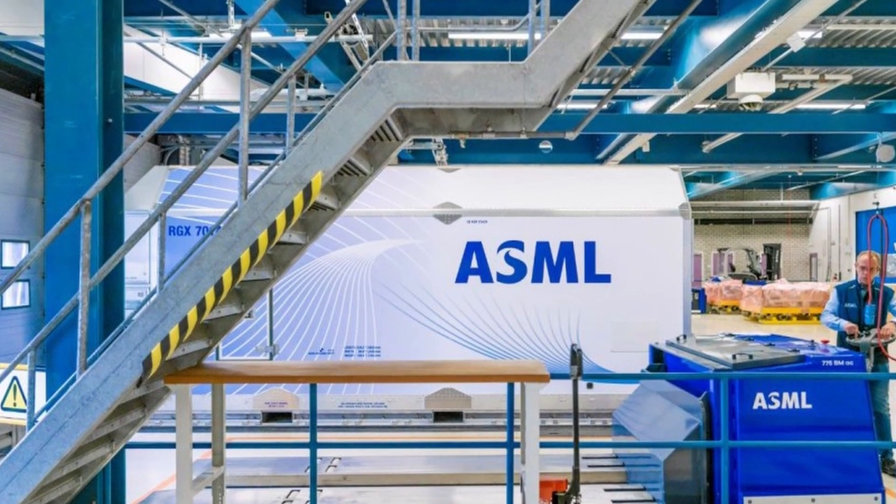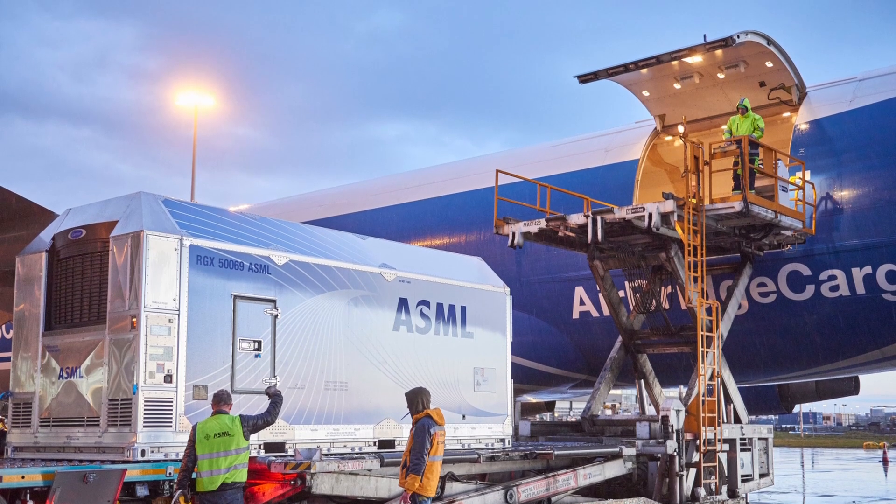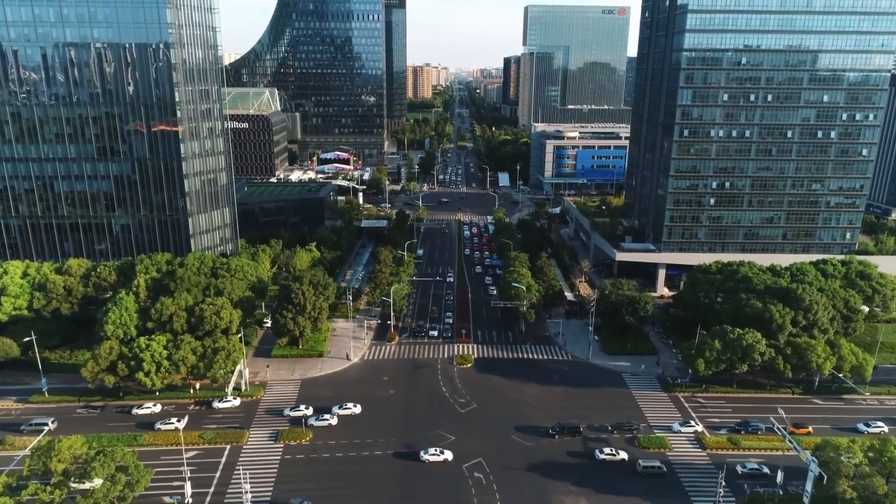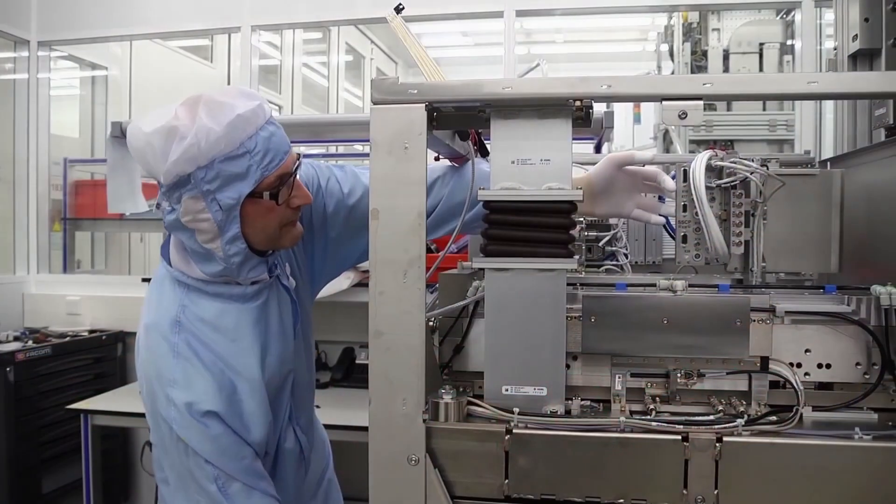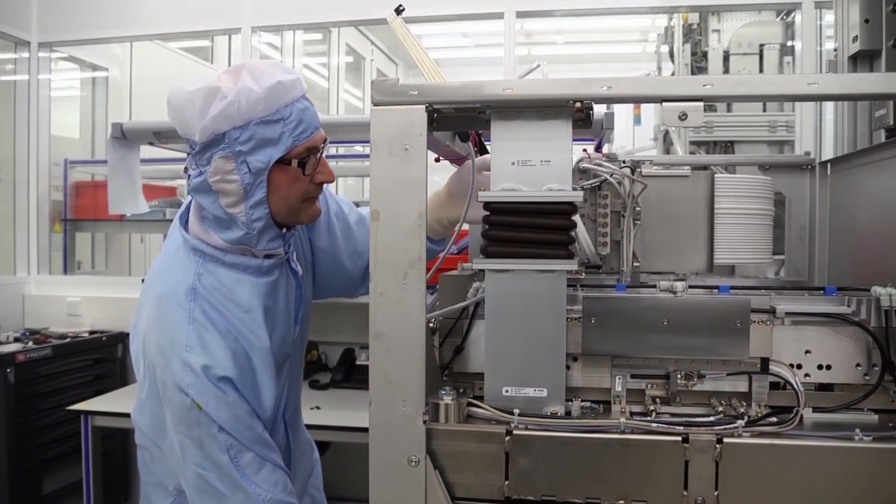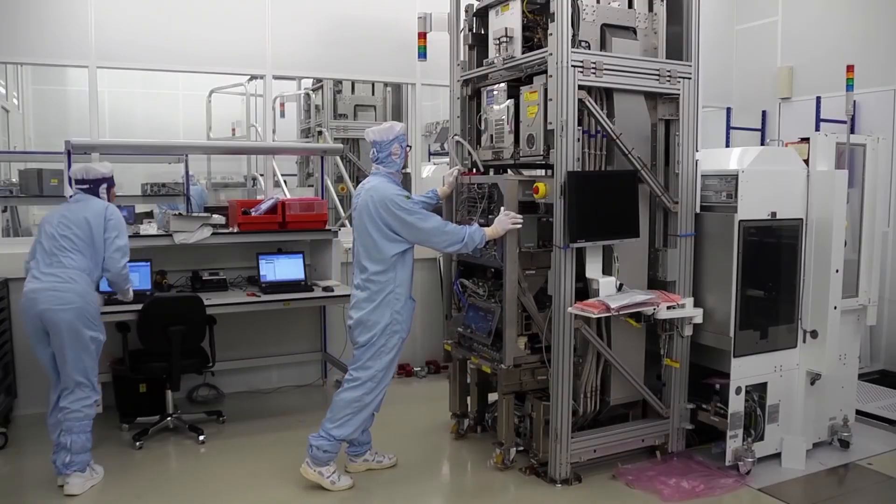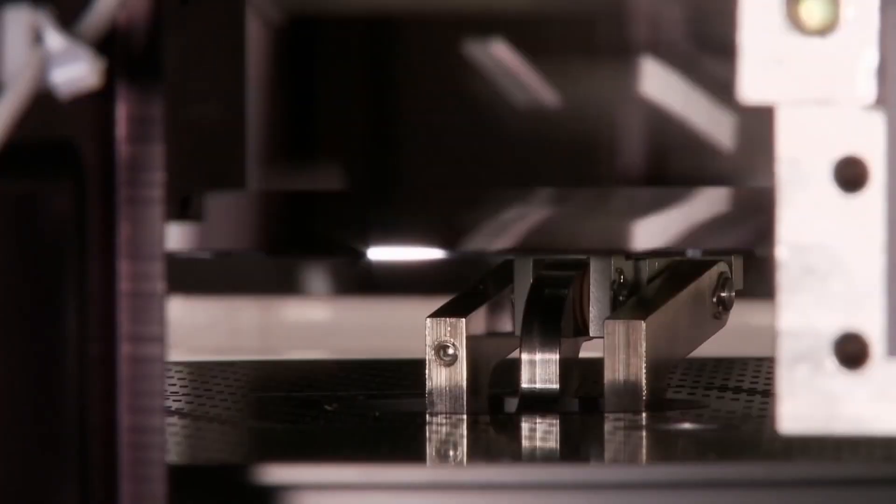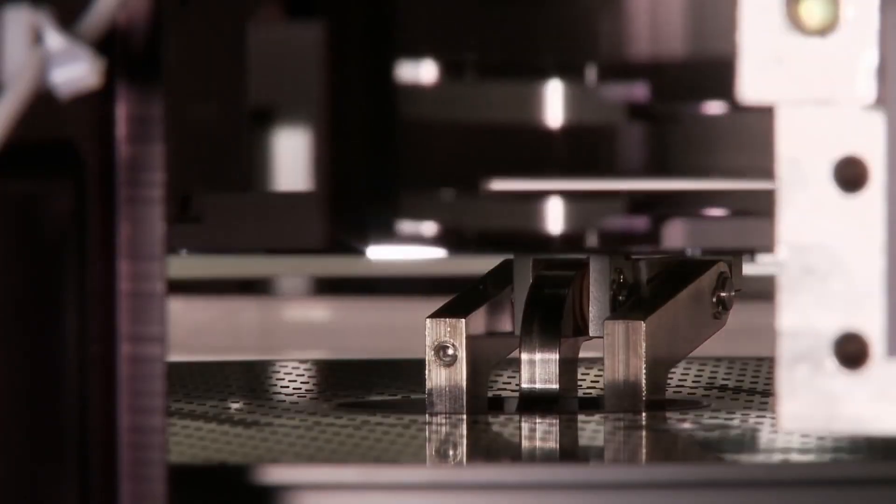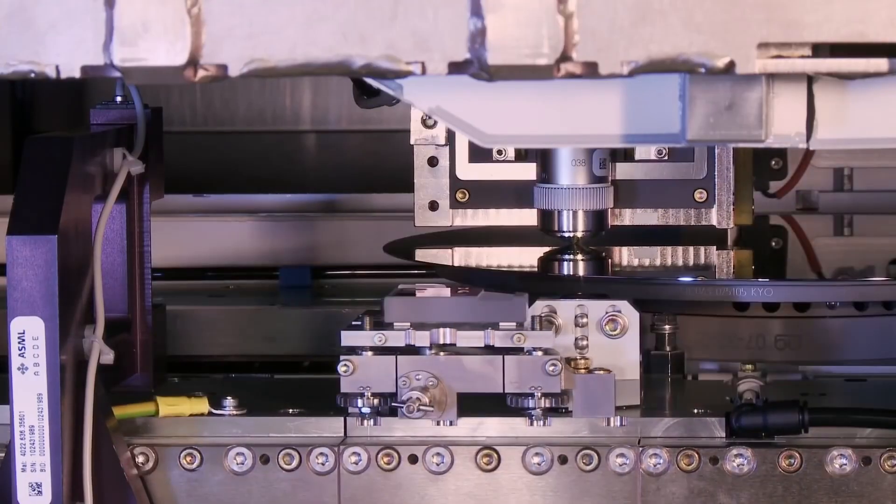ASML's success in recent years has made it more valuable than most companies in the semiconductor industry and the world today, including Intel. Selling 125 EUV machines in September 2021 may not sound like much, but it would when you learn that ASML sells them for more than $100 million each and has a large number of demands from companies around the globe.